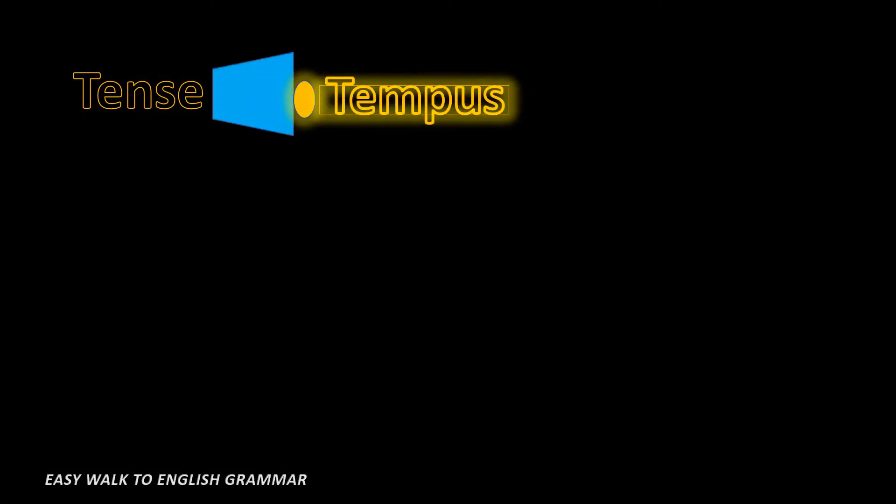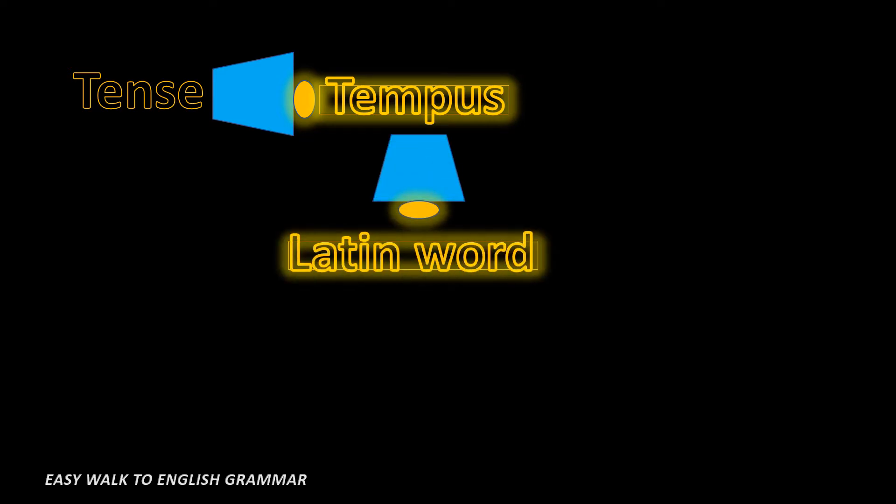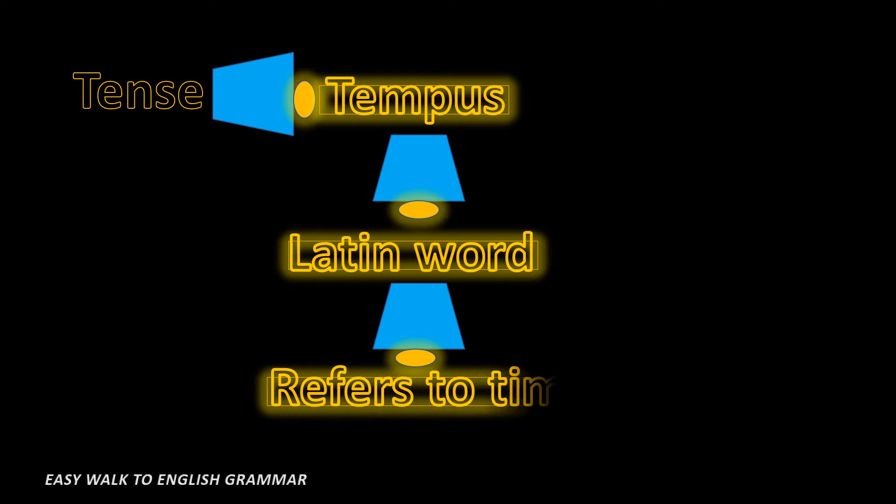This is a brief history of tense. Tense is a word which came from the word tempus, and tempus is a Latin word that refers to time. From this we can understand that when we want to speak something with a reference to time, we are creating a sentence using tenses. I hope you understood.